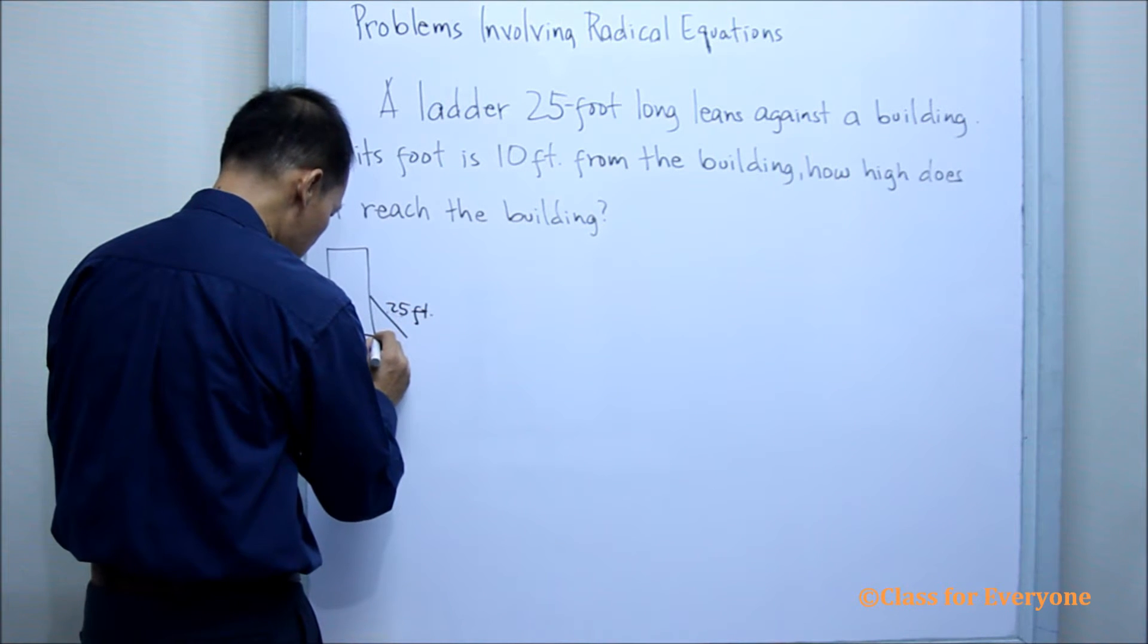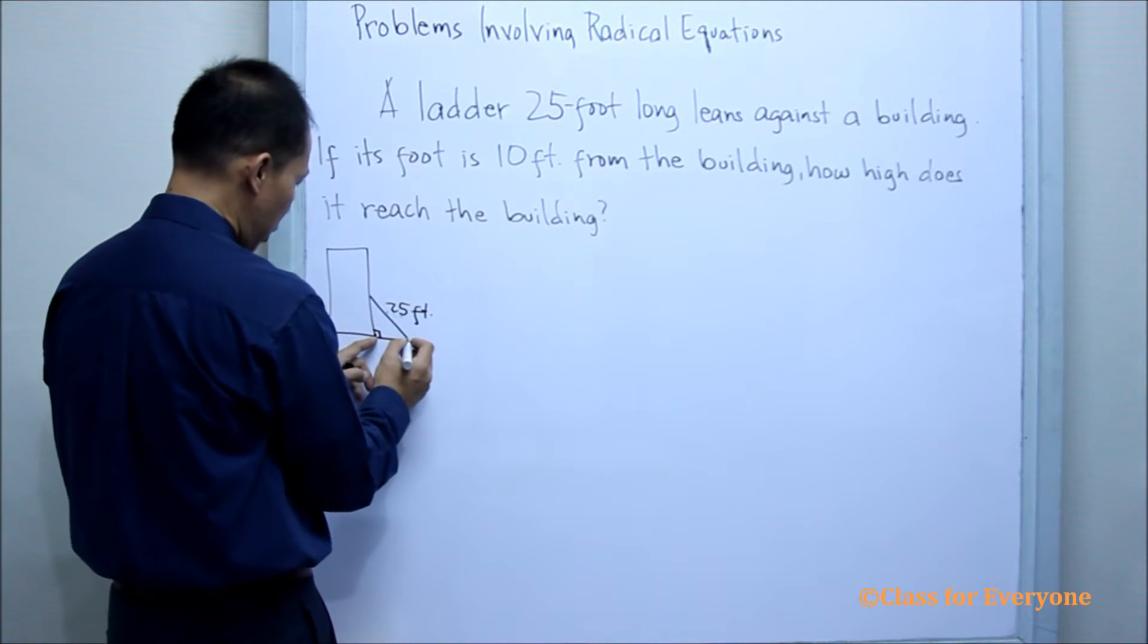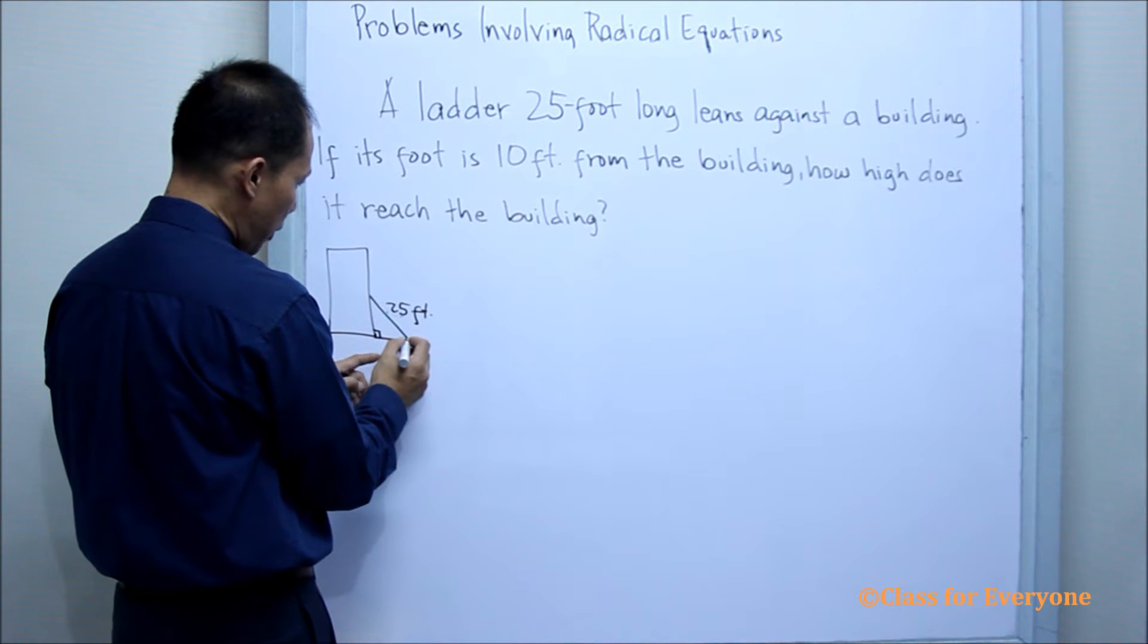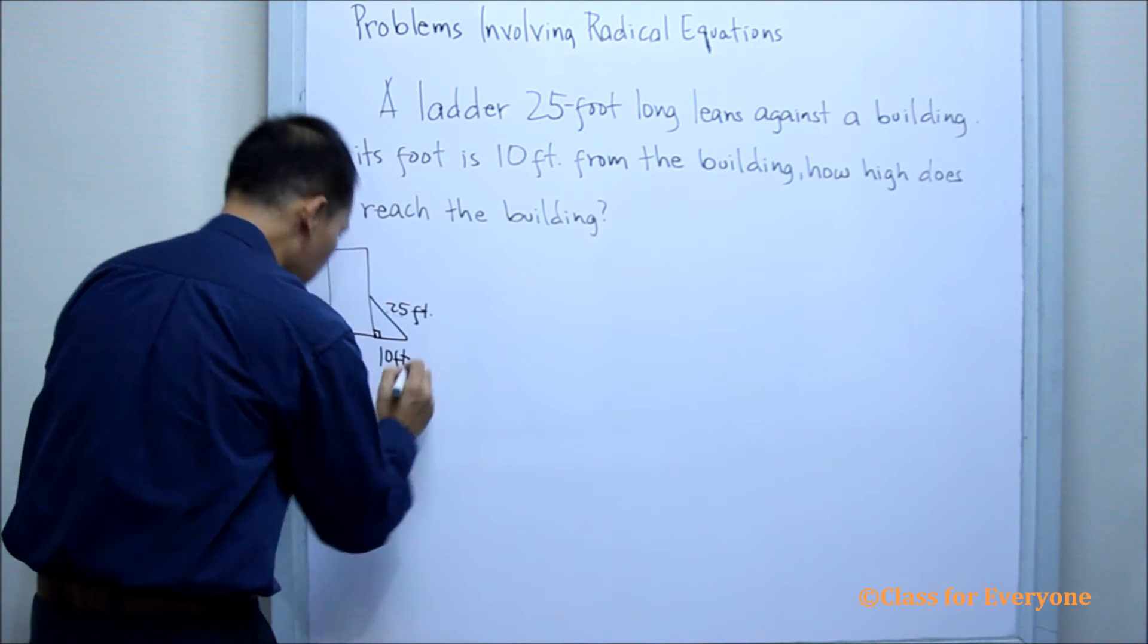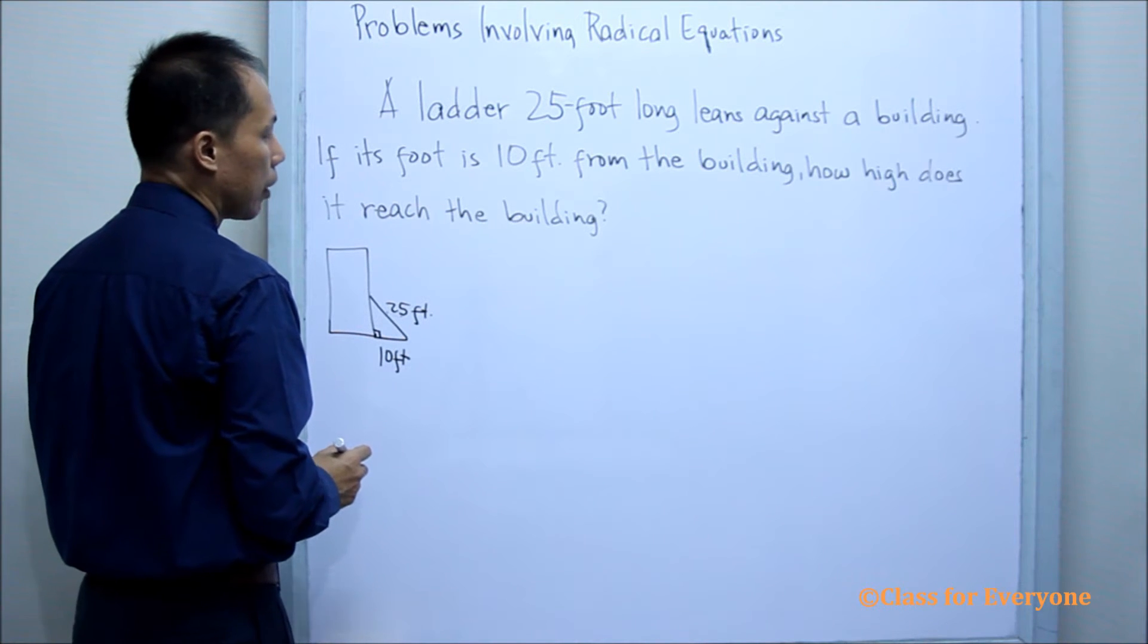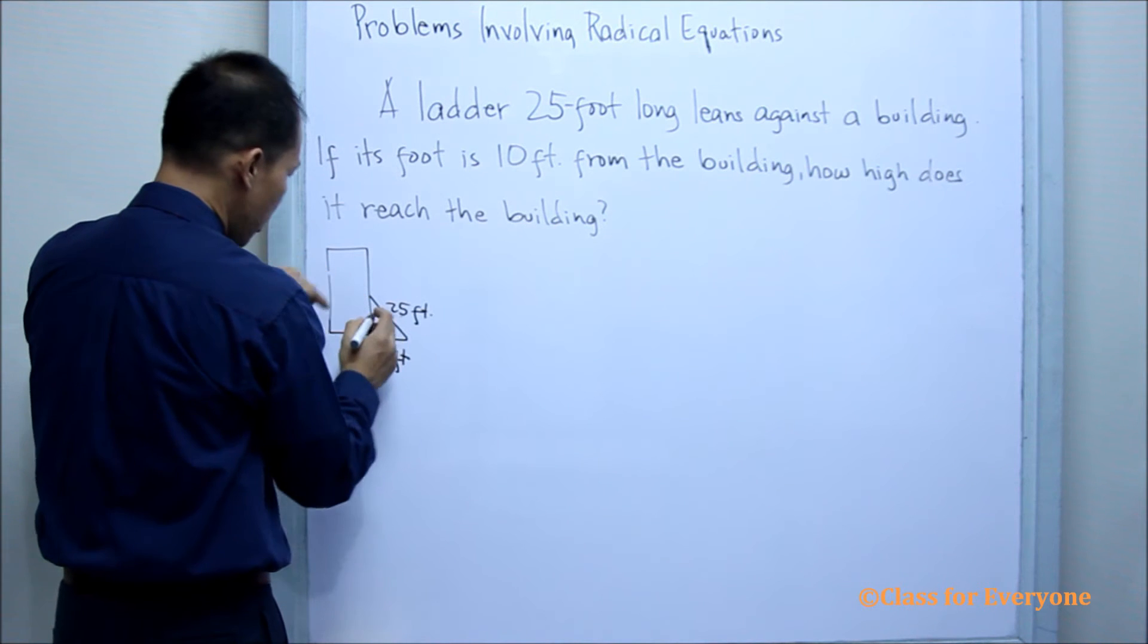And then this is the base of the building. And then the distance from the foot of the ladder to the building is 10 feet. What is missing is that we are looking for the height.